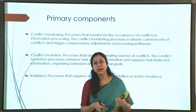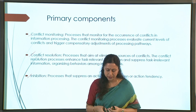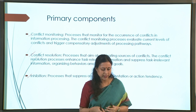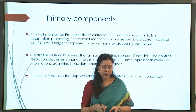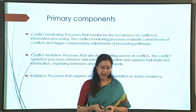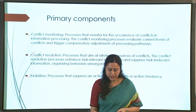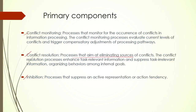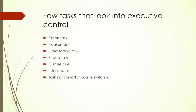If some kind of input is not in our interest, we should be able to ignore it - for that you need a heightened monitoring system. Then conflict resolution: once you have identified the potential problem, you should be able to handle it through processes that aim at eliminating the source of conflict. Conflict resolution and inhibition go hand in hand, because you have to inhibit those cues that are irrelevant, and unless you have inhibited them, you cannot find a resolution to your conflict. These are the three primary components.